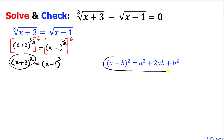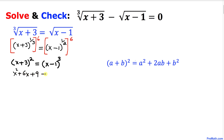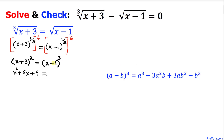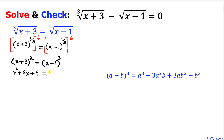Now let's expand the left hand side binomial using the (a + b)² formula. This gives us x squared plus 6x plus 9, and now let's expand the right hand side using the (a minus b)³ formula.